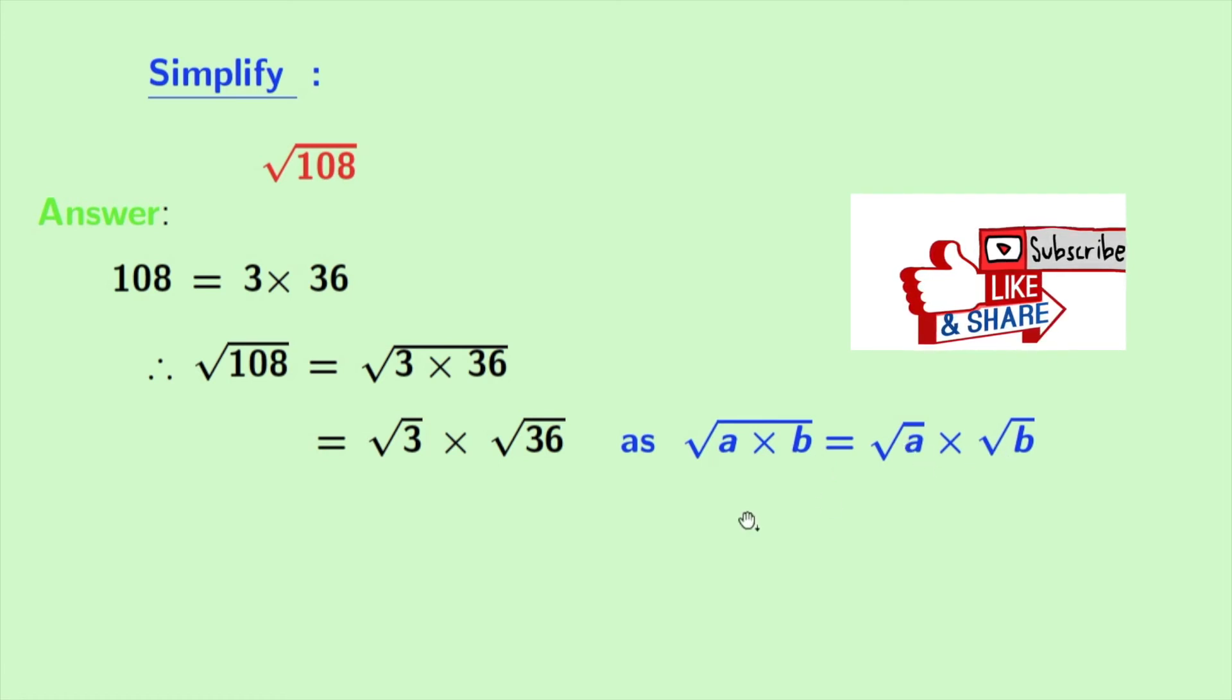Here a is 3 and b is 36. Now root 3 will be same and square root of 36 can be written as 6. So now it is 6 root 3 and this is the expected answer.